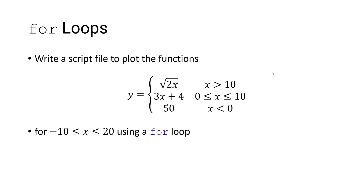In this problem, we're going to write a script file to plot the function y, where y is equal to the square root of 2 times x when x is greater than 10, y is equal to 3x plus 4 when x is greater than or equal to 0 and less than or equal to 10, and y is equal to 50 when x is less than 0. And we're going to do this using a for loop.